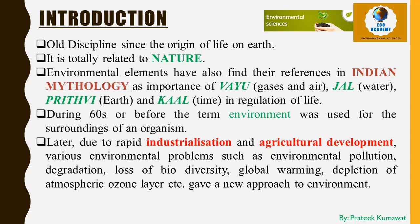If we refer to Indian mythology texts, there are references to environmental elements. In Ayurveda and Indian philosophy, the human body is considered to be made up of five elements, known as Panch Bhut or Panch Mahabhut. Vayu, Jal, and Prithvi are part of Panch Mahabhut, which according to Hinduism is the basis of all cosmic creation. These elements have different characteristics and account for different human experiences.